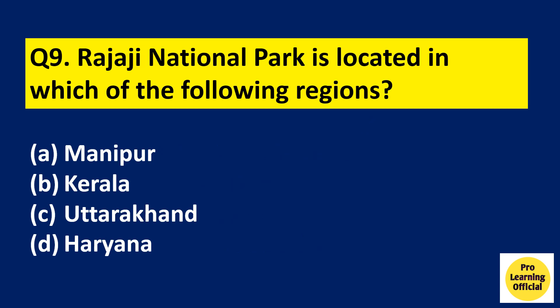Question 9: Rajaji National Park is located in which of the following regions? Option A: Manipur. Option B: Kerala. Option C: Uttarakhand. Option D: Haryana. The right answer is Option C, Uttarakhand. Rajaji National Park is situated in Uttarakhand.